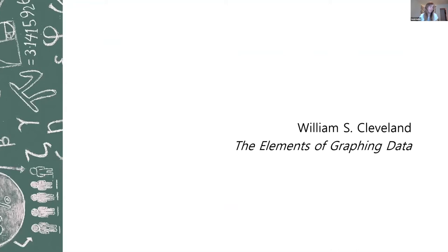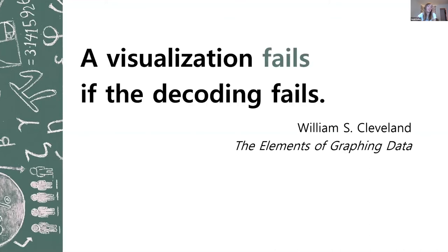William S. Cleveland said: 'When a graph is made, quantitative and categorical information is encoded by a display method, then the information is visually decoded. This visual perception is a vital link. No matter how clever the choice of information and no matter how technologically impressive the encoding, a visualization fails if the decoding fails. Some display methods lead to efficient, accurate decoding and others lead to inefficient, inaccurate decoding.' So we are going to talk about this kind of inefficient or even inaccurate decoding.